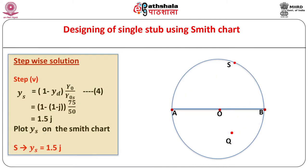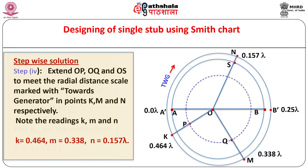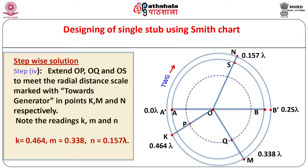Step 3: Calculate the value of normalized admittance YS using equation 4 and plot YS on the Smith chart. Let S represent YS. Note that point S will always lie on the G equal to 0 circle, and YS comes out to be j1.5. Step 4: Join center O with points P, Q, and S. Extend OP, OQ, and OS to meet the radial distance scale marked 'towards the generator' at points K, M, and N respectively. In this problem, K equals 0.464, M equals 0.338, and N equals 0.157 lambda.